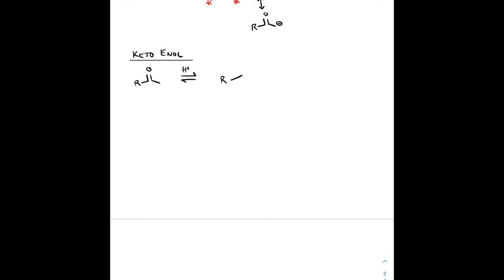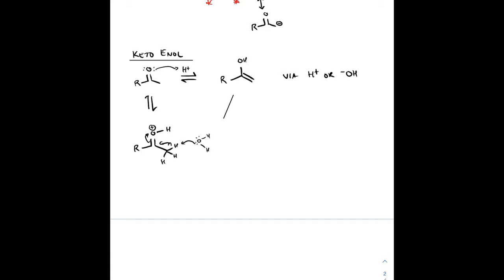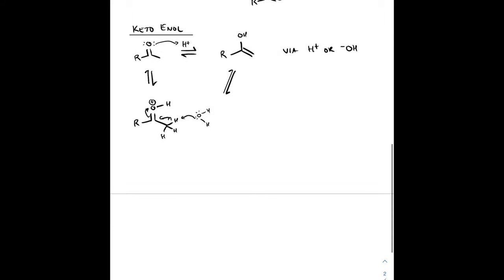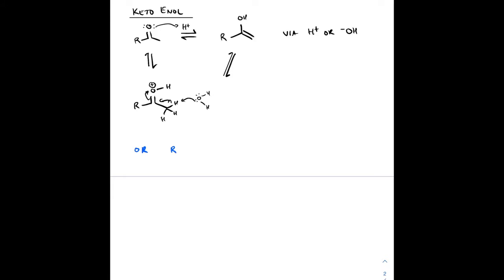Let's go back to keto-enol tautomerization. If we have a ketone in an acidic or basic medium, we can have this transformation — it's an equilibrium. For example, you can protonate the oxygen of the carbonyl to give an oxonium intermediate. That positive charge on the oxygen makes the alpha hydrogen very acidic, so basic water can remove it and you get your enol. The mixture is not 50-50; varying percentages depend on the environment.